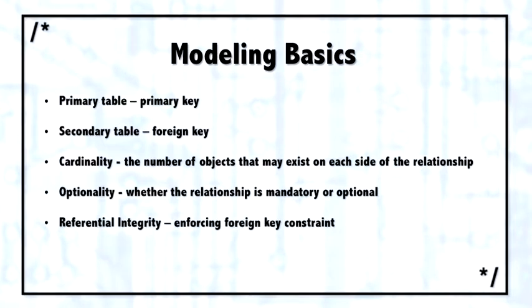Then there's referential integrity. Referential integrity, or RI, is often thought of as no orphans, meaning if there's a row in the secondary table with a foreign key, there has to be a row matching it with a primary key. That's close but not exactly correct because of optionality. A better way to state referential integrity would be that if there is a value in the foreign key, there has to be a matching value in the primary key.